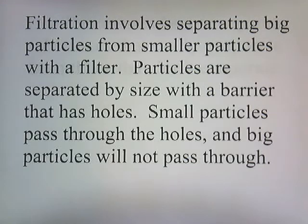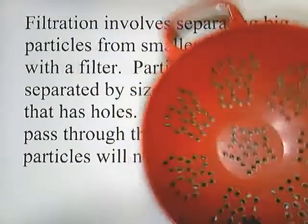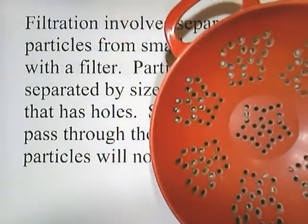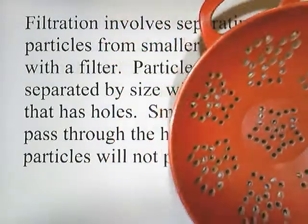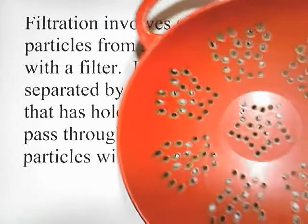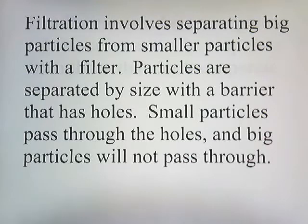An example of a filter is a colander — a bowl that has holes in it. Colanders are used to separate water from vegetables: you boil vegetables, pour them through the colander, and the water passes through the holes while the vegetables, which can't fit through, get caught. That's an example of filtration.